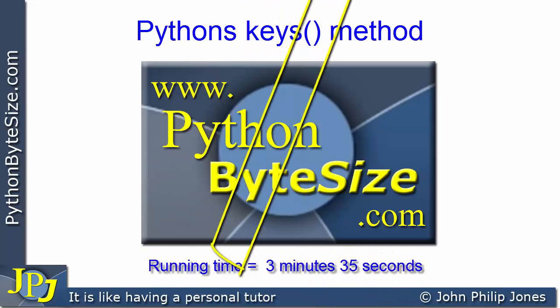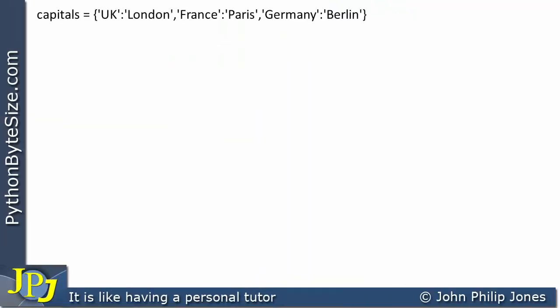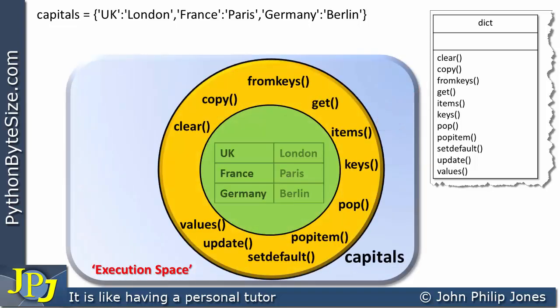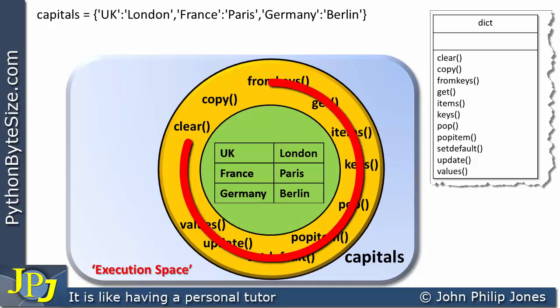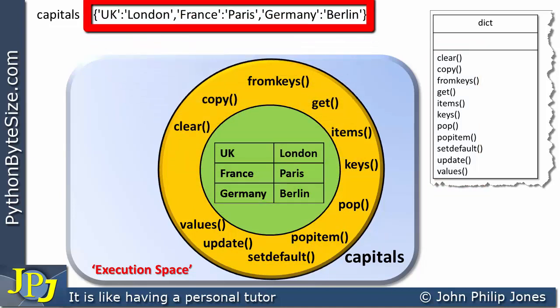In this video we're going to look at the keys method as defined in the Python dictionary class. We are creating a dictionary based upon the dictionary class, and the program statement will produce an instance of this class, as shown in the schematic animation. Here we can see all of the methods defined in the class and the three key-value items from the program statement.